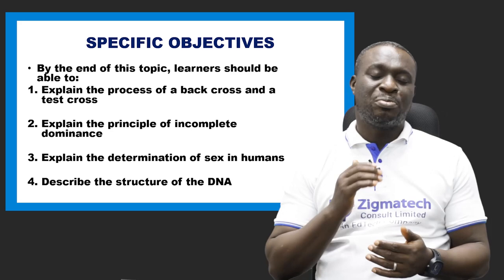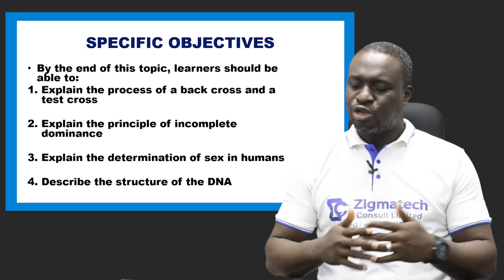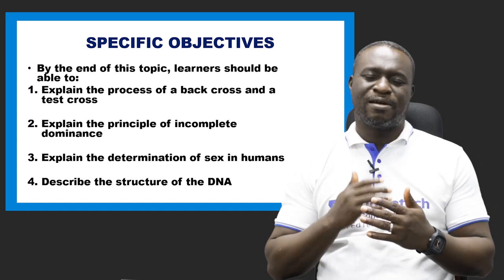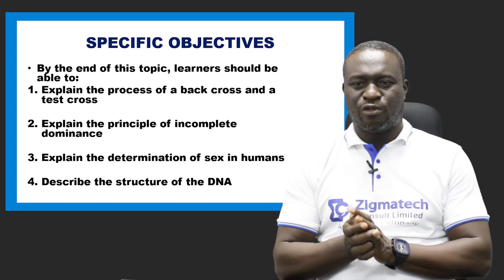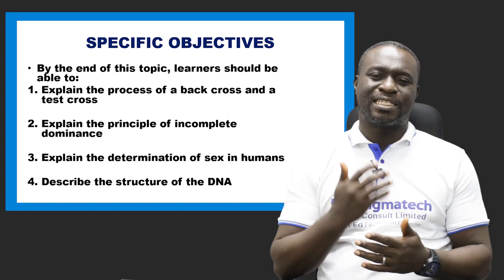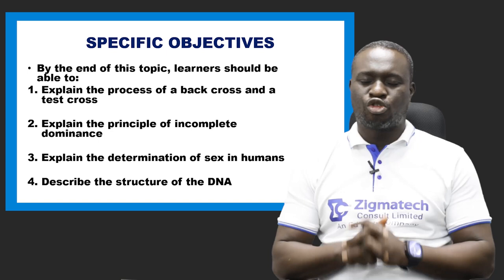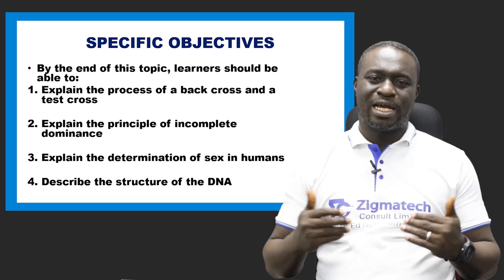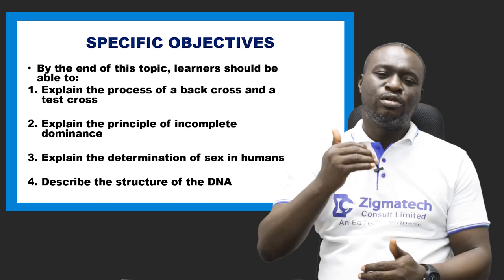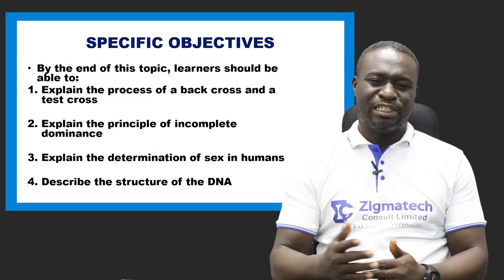As our specific objectives, by the end of this class, you should be able to explain the process of back cross or test cross, explain the principle of incomplete dominance, explain the determination of sex in humans, and describe the structure of DNA and tell us one or two things about chromosomes.